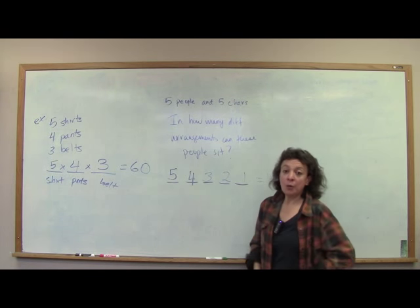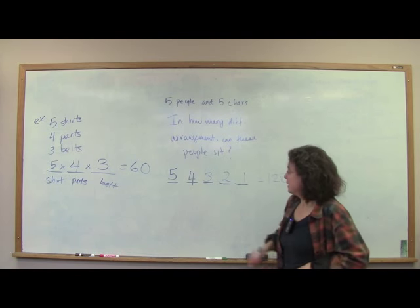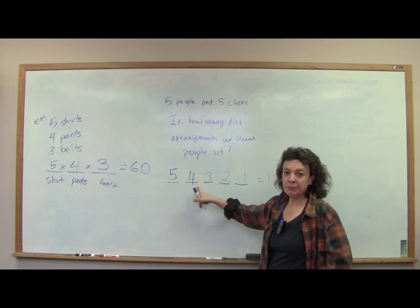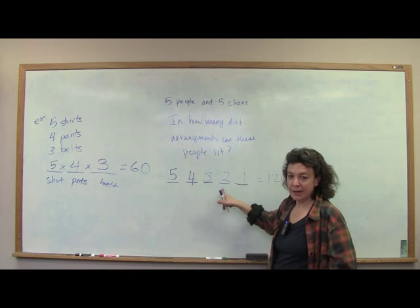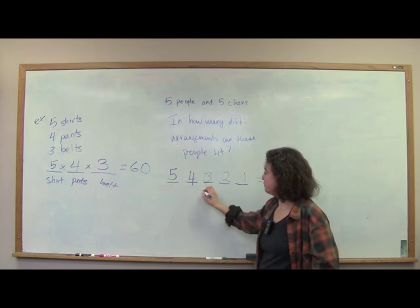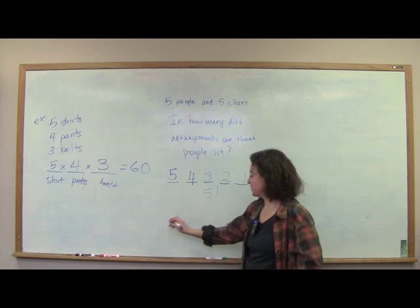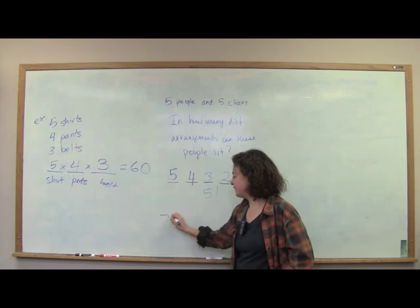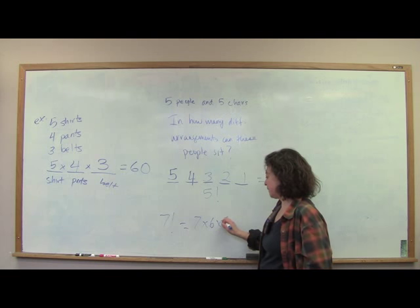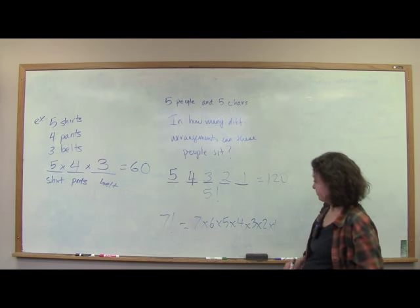There's a name for when you take a number and multiply by every number down until 1 — this is called 5 factorial. For example, 7 factorial would be 7 × 6 × 5 × 4 × 3 × 2 × 1.